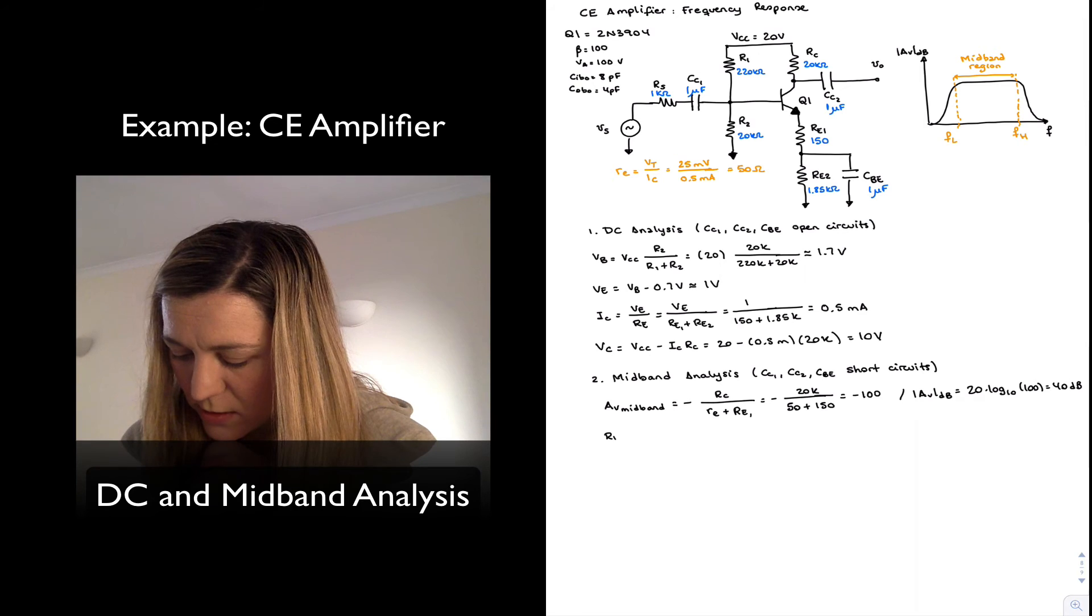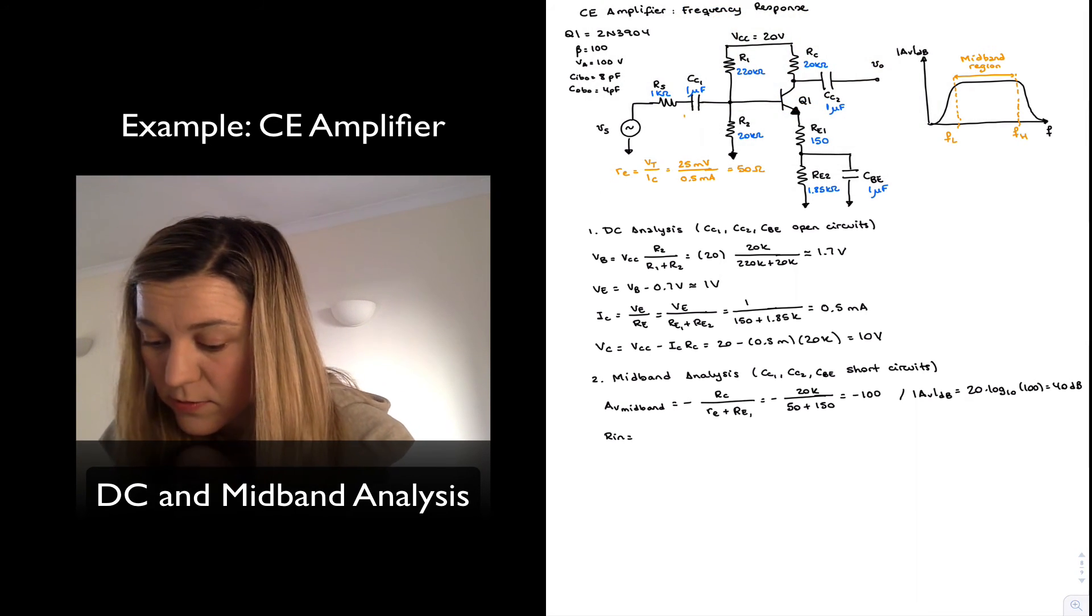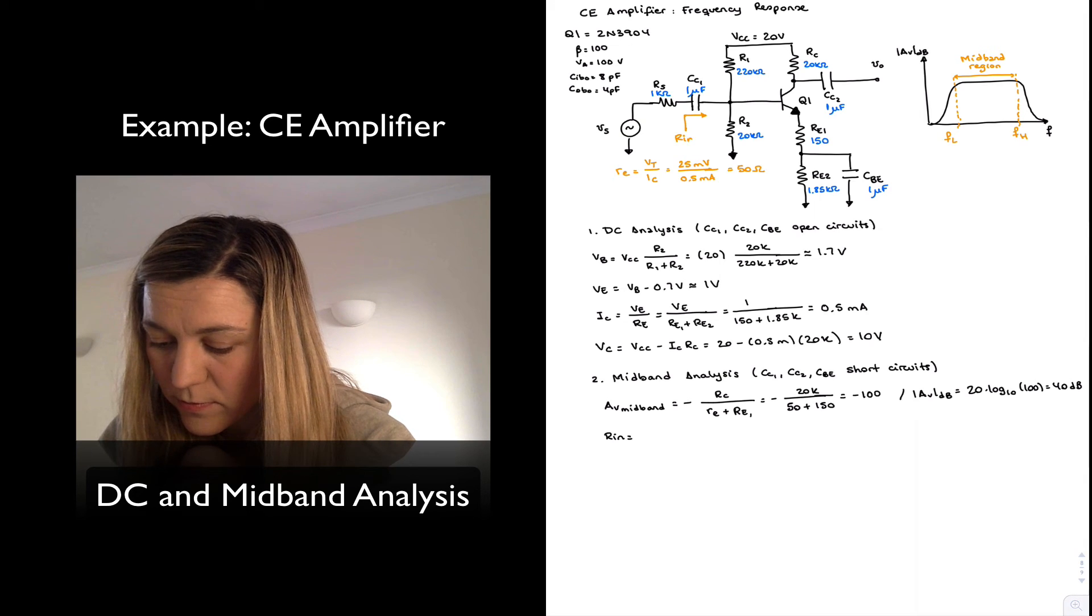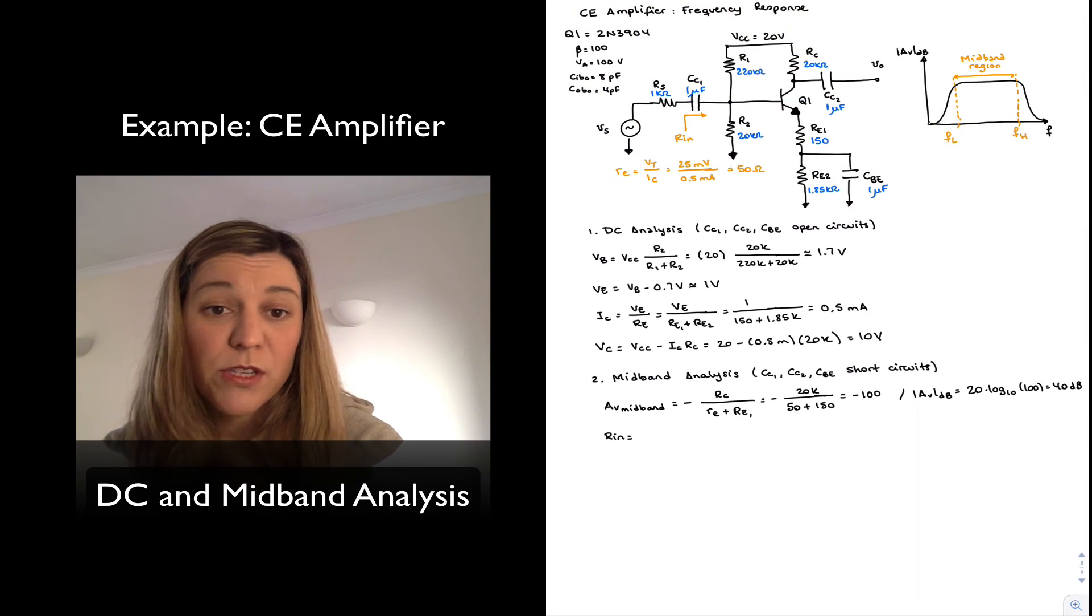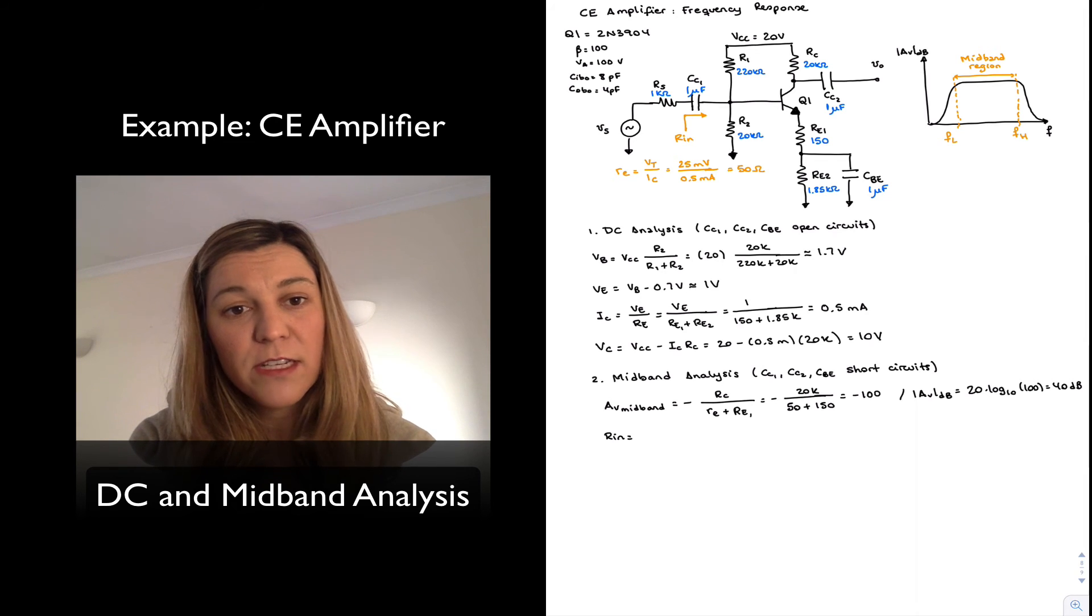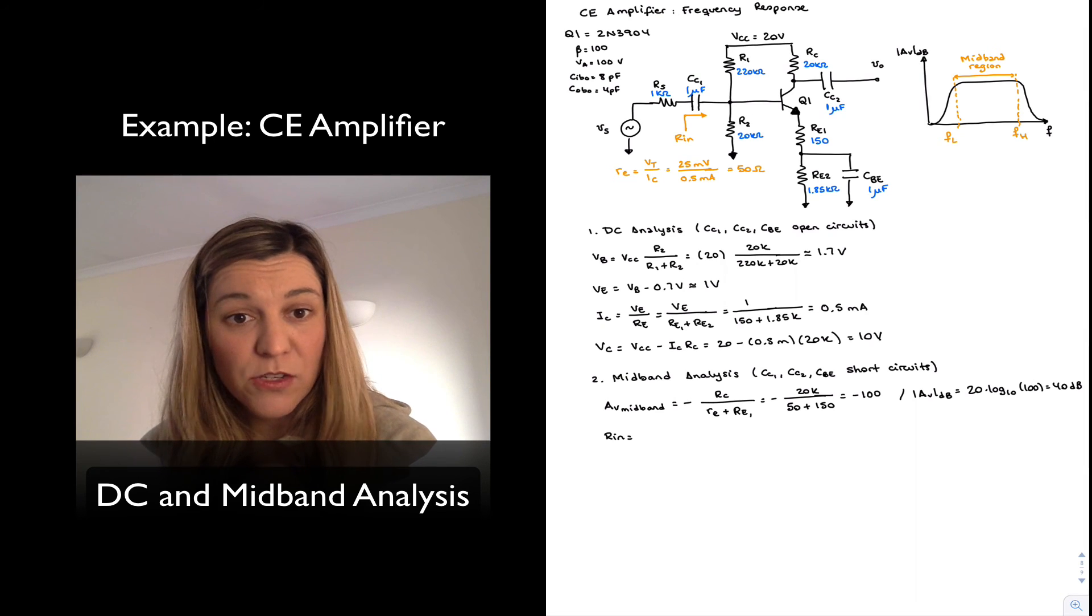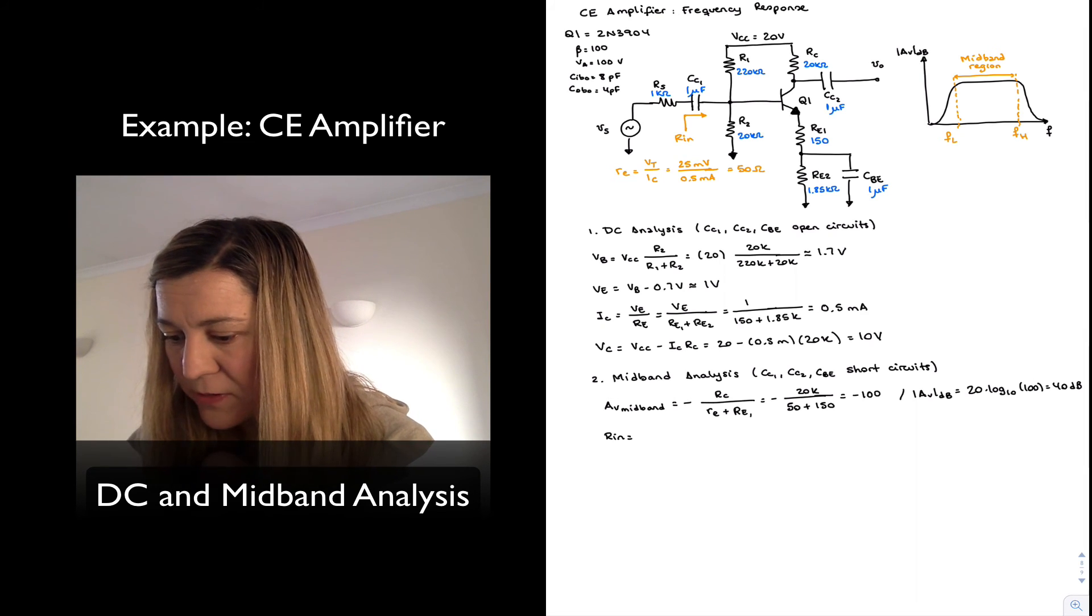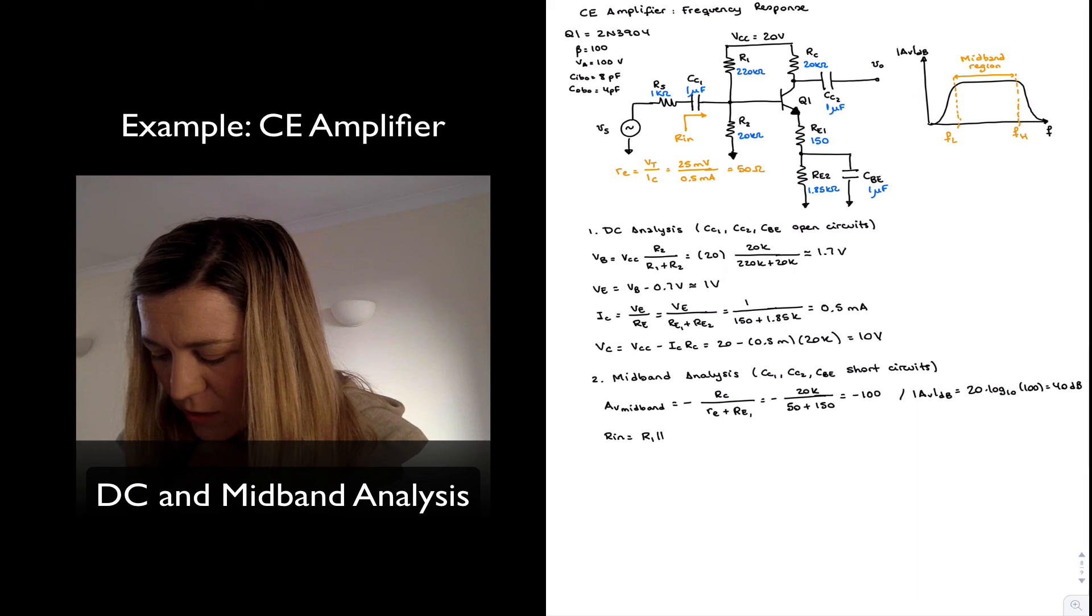My input resistance will be the resistance looking into the base of my circuit. And in this case, I'm not going to consider RS, and the reason for that is I'm going to assume that RS is the series resistance of my signal source, and so I'm going to associate it with the source and consider it part of the signal source as opposed to part of the amplifier. So I'm just going to calculate the input resistance of my actual amplifier,